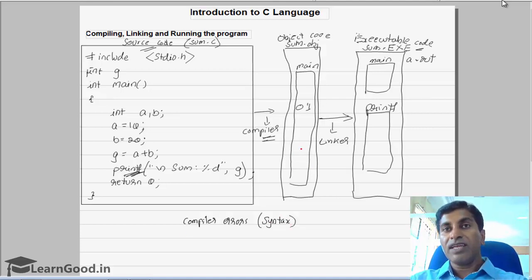The linker will convert an object file to an executable file. During that time also you will get an error. For example, instead of giving printf, let's say you might have given by mistake print. So what linker tries to do is it will go and search in this included file...